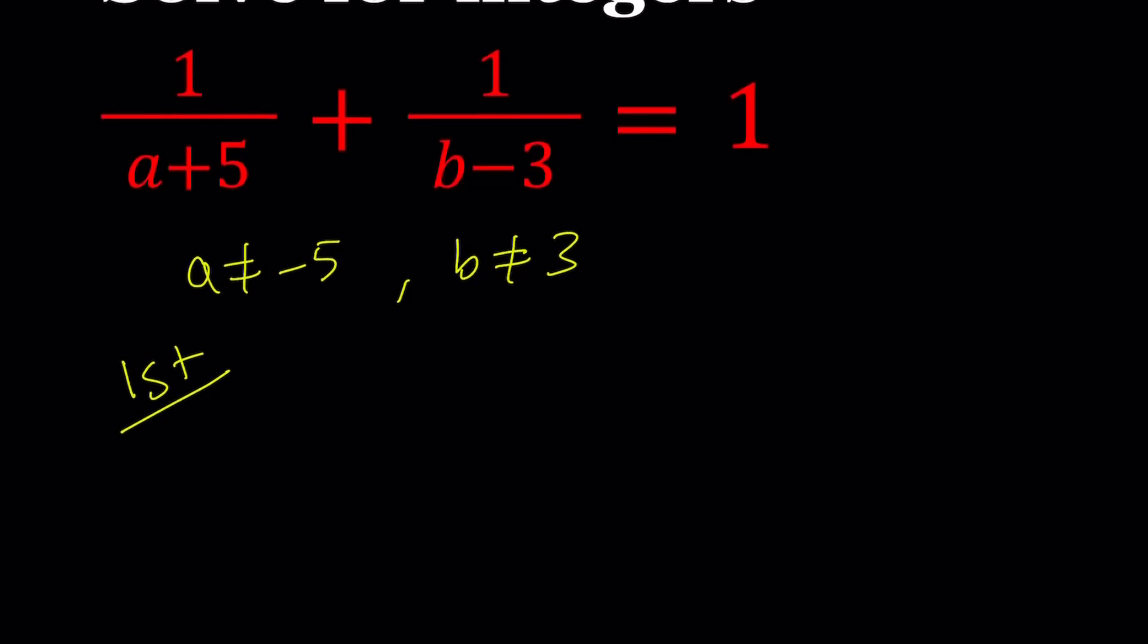So I'll start with the first method. For my first method, I'm just going to make a common denominator. Straightforward, brute force. Multiply crisscross applesauce, you're going to get a plus 5 plus b minus 3, divided by the product, which is a plus 5 times b minus 3.